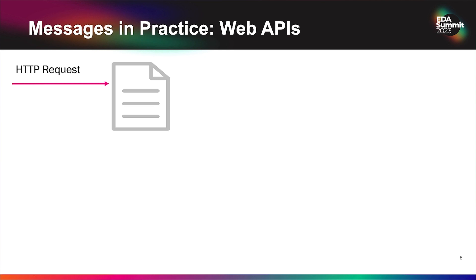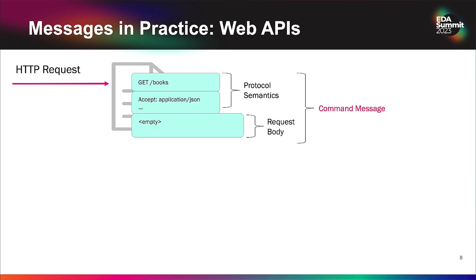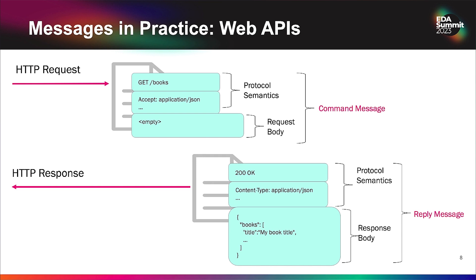When we think about messages in practice, we sometimes don't realize that our web APIs are exchanging messages all the time. We're designing messages when we design web APIs. We send an HTTP request — a command message — to an API server, and then we get a response back. That command message is comprised of protocol semantics about HTTP, whether using HTTP 1.1, 2, or 3, plus the request body. So the combination of the GET, the path, the header fields, and the request body make up a command message. The API server likewise sends a reply message back with the response code, content type, and response body. So we're already exchanging command and reply messages with our synchronous APIs.